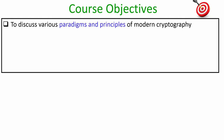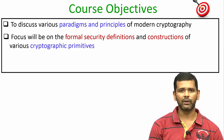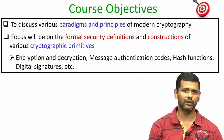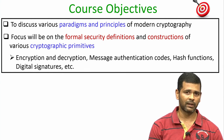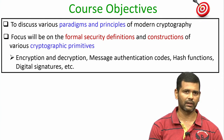The objectives of the course are as follows: we will discuss the various paradigms and principles of modern cryptography and the focus will be on formal security definitions and constructions of various cryptographic primitives. Some of the cryptographic primitives which we will discuss in this course are encryption and decryption, message authentication codes, hash functions, digital signatures, etc.